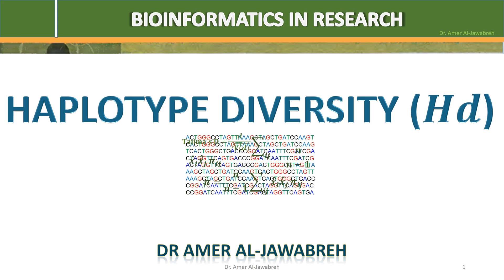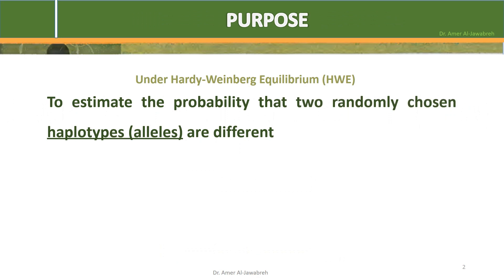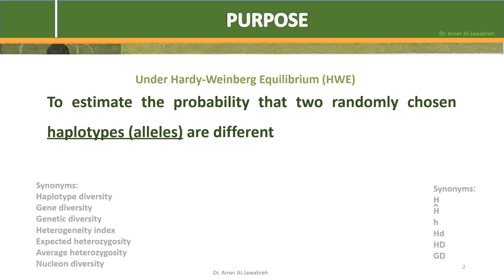Haplotype Diversity. The purpose is to estimate the probability that two randomly chosen haplotypes or alleles are different. In the literature, haplotype diversity and its abbreviation have several synonyms.